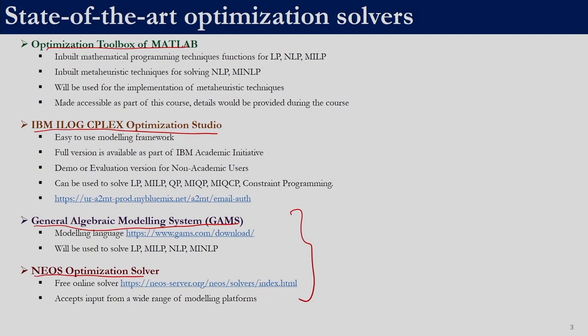The optimization toolbox of MATLAB has inbuilt mathematical programming techniques for linear programming, non-linear programming, and mixed integer linear programming. It also has inbuilt meta-heuristic techniques which can solve non-linear programming for which mathematical programming techniques are also available, and it can solve certain versions of mixed integer non-linear programming.